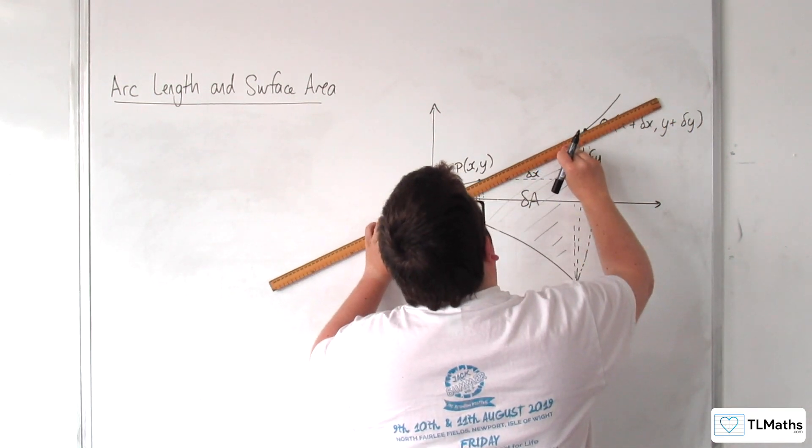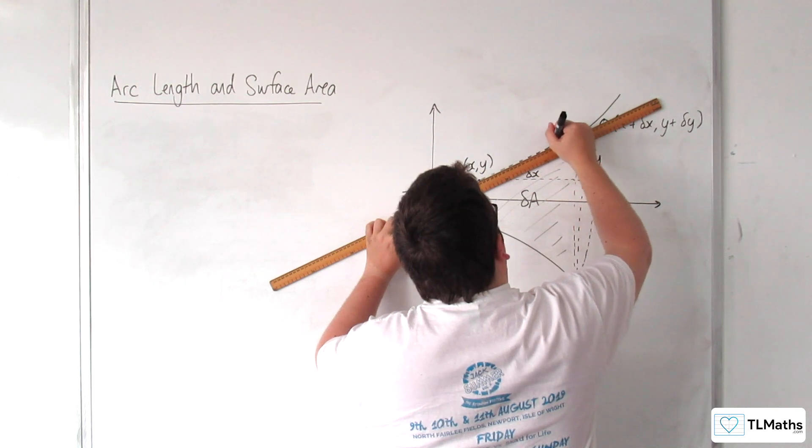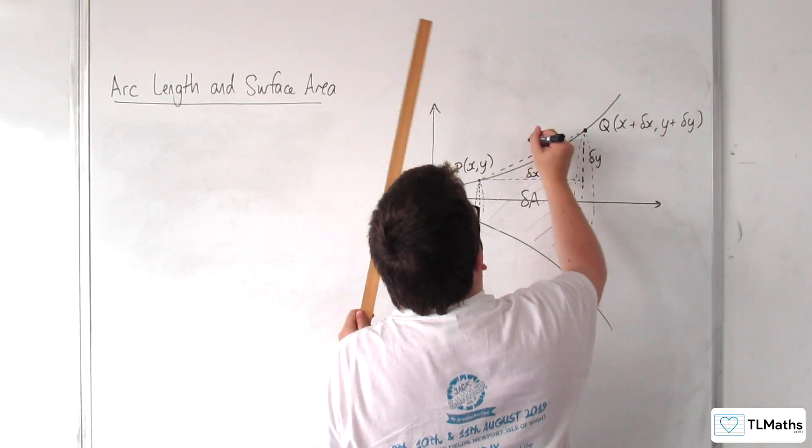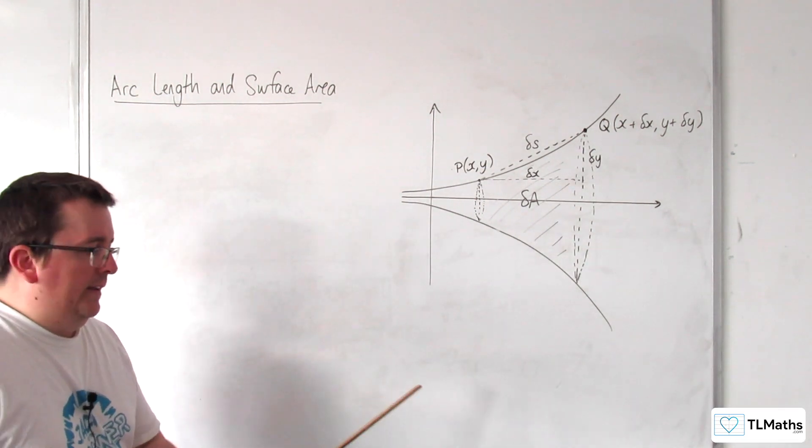And we're going to look at that distance there, and we're going to call that delta S, where S is the arc length.